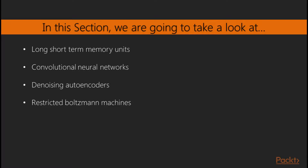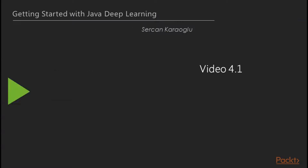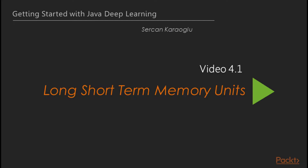Autoencoders help data scientists to find good representations of the raw data, extracting the features that one once had to do with handcrafted methodologies. In this section, we are going to cover all of these. We move on to the first video of this section, which deals with long short-term memory units.